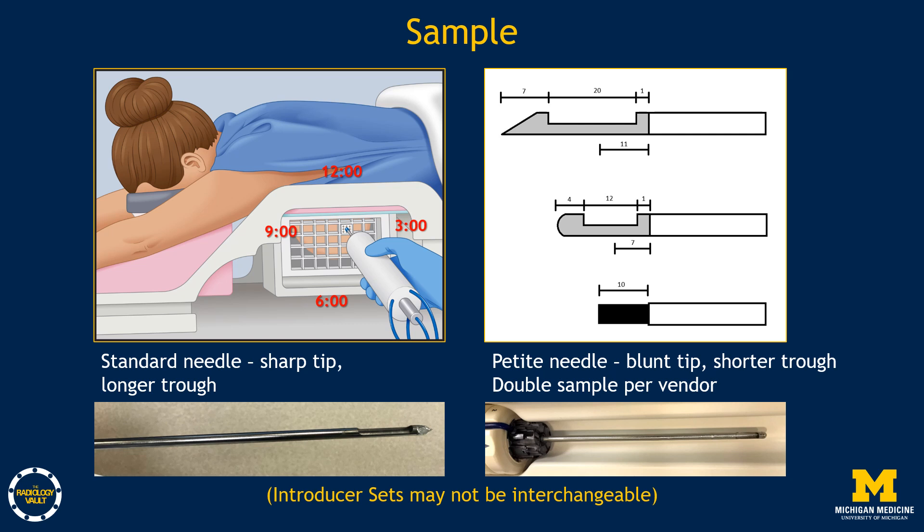It can also be helpful to have a diagram with measurement specifications to reference when planning target localization. Knowing the distances can help ensure the needle will be appropriately positioned in the breast and, if needed, allow adjustment to avoid penetrating to the other side or inadvertently sampling the skin surface.